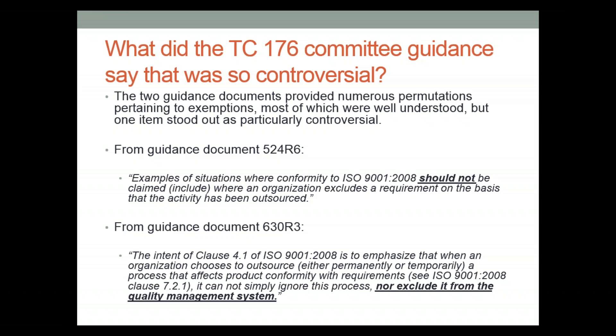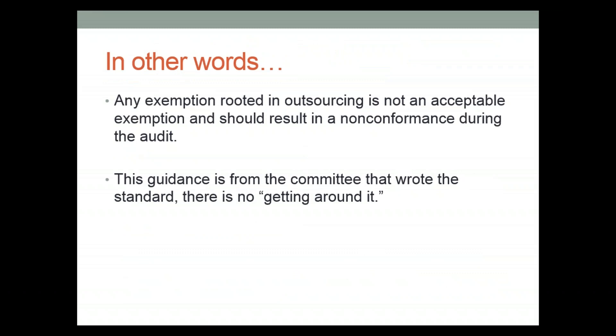From 524-R6: examples of situations where conformity to ISO 9001-2008 should not be claimed include where an organization excludes a requirement on the basis that the activity has been outsourced. This is further explained in 630-R3: the intent of Clause 4.1 is to emphasize that when an organization chooses to outsource — permanently or temporarily — a process affecting product conformity, it cannot simply ignore this process and cannot exclude it from the quality management system. In other words, any exemption rooted in outsourcing is not acceptable and should result in a non-conformance.